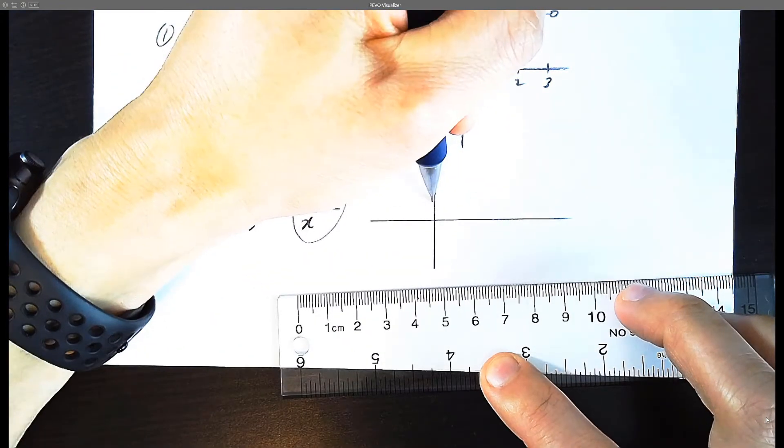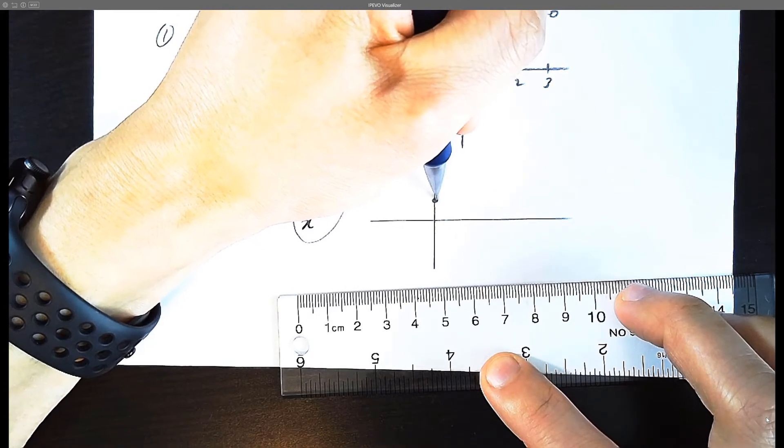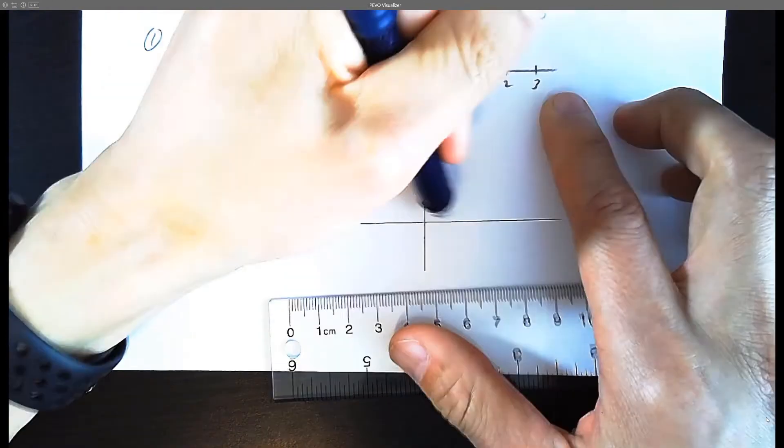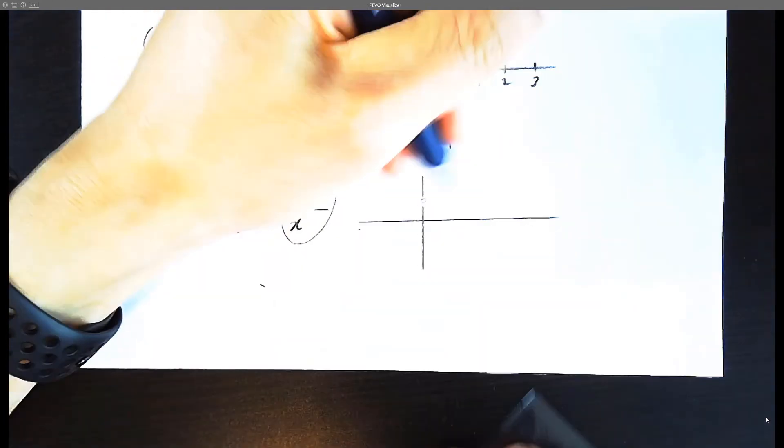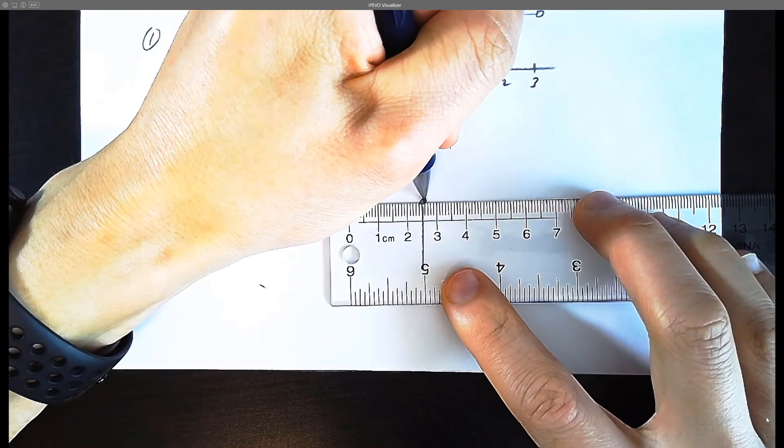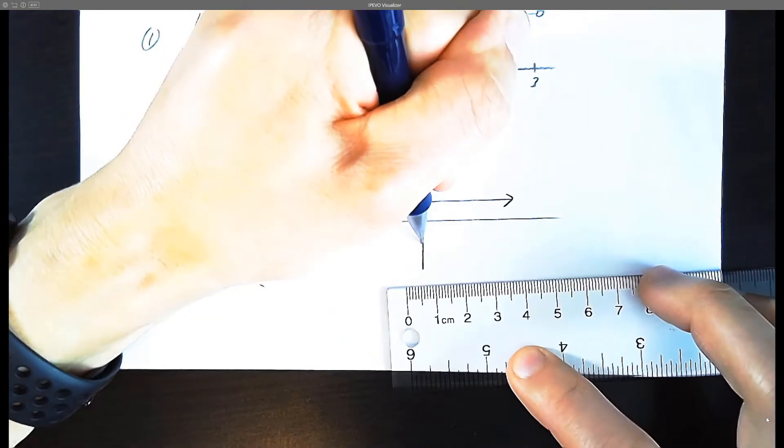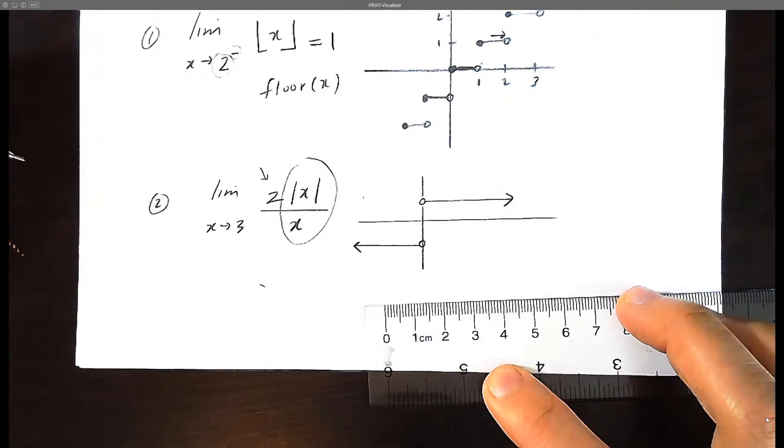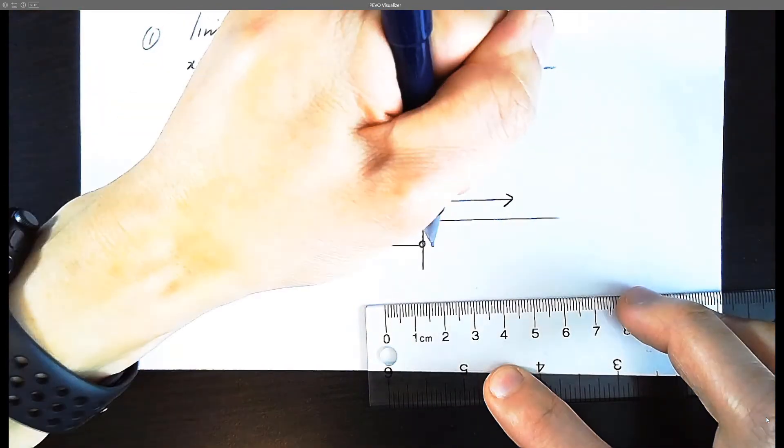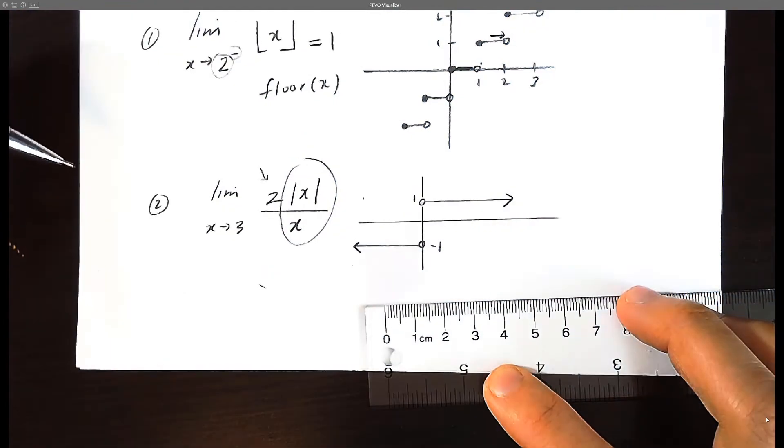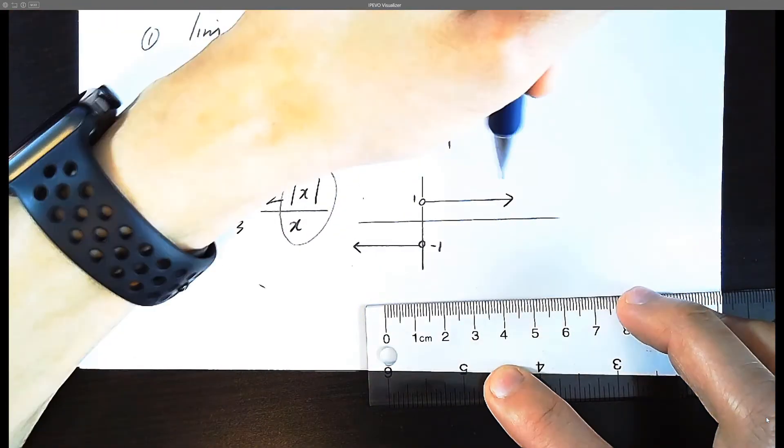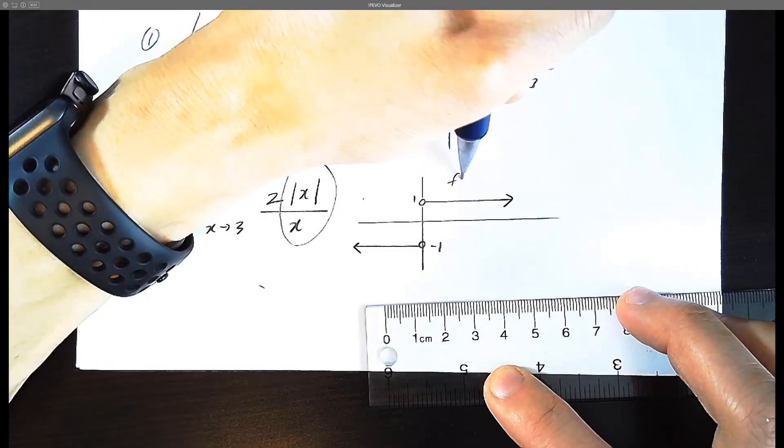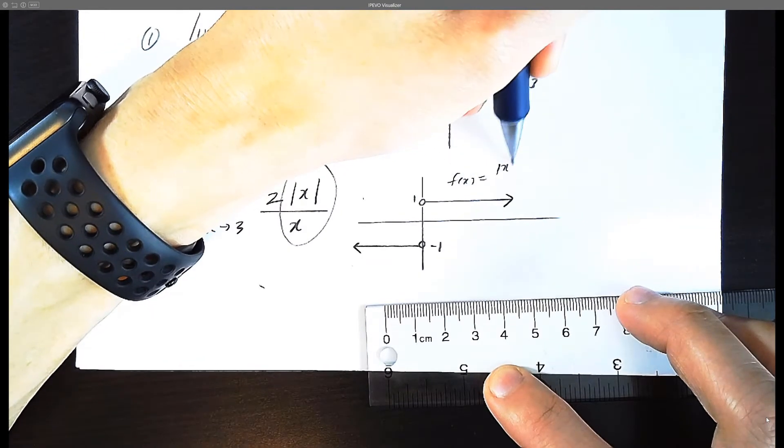Now it's good to memorize absolute value of x over x as a normal graph. That either is going to be positive one. Now, you can't divide by zero. So this is going to be a hollow circle here. And then it's going to be a hollow circle here. Because x can't be equal to zero. And this here is going to be positive one. This is going to be negative one. Now this here is not the answer. This here is your standard function. f of x equals absolute value of x over x.